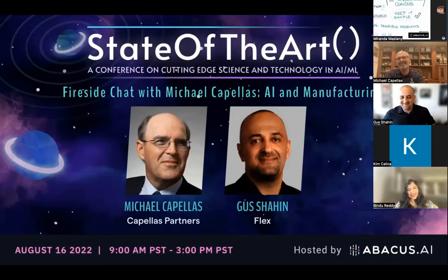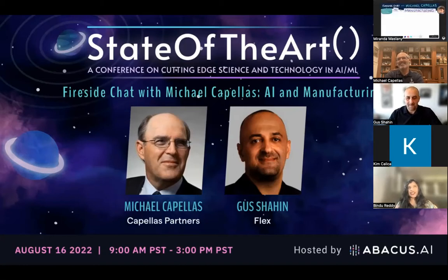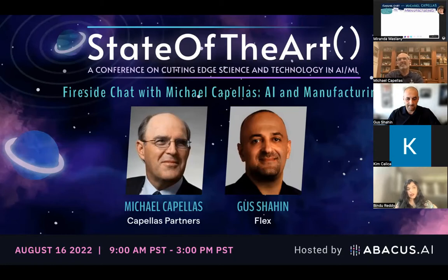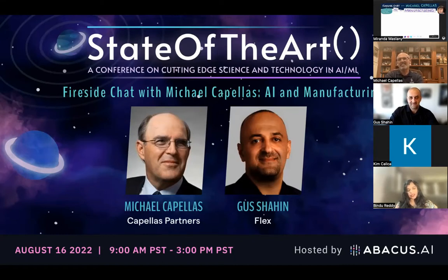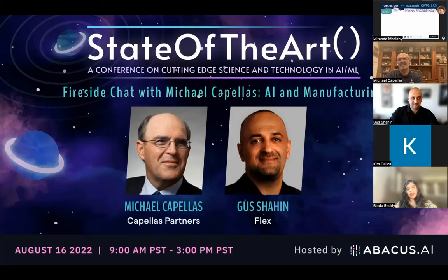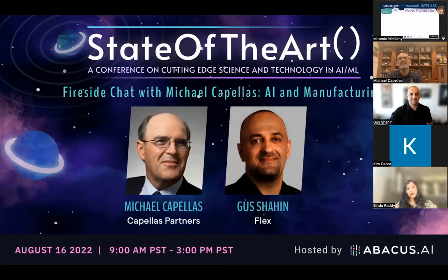Gus will be having a fireside chat with Michael Capullas. Michael currently serves on the board of Cisco as lead independent board member and is also the chairman of Flex. He has had a very illustrious career — CEO of several large, innovative, and iconic corporations. He was CEO of Compaq, President of HP, and CEO of WorldCom, and has long been involved in the supply chain and manufacturing space, including as an advisor to MuleSoft.